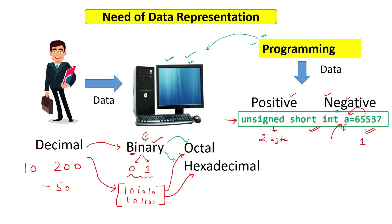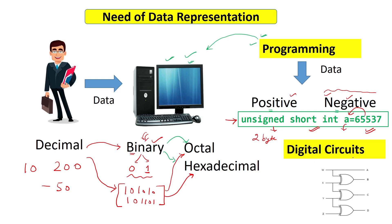In computers, negative numbers have different types of representation. The popular ones are three: one's complement, two's complement, and sign magnitude representation. If you talk about digital circuits, all digital circuits used in computers or embedded devices understand the language of zeros and ones — that's why they are called digital circuits. You should understand how these circuits interpret data given in the form of zeros and ones, and the data manipulation techniques related to data representation.